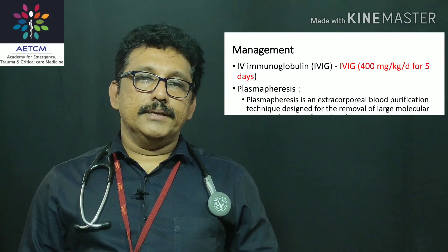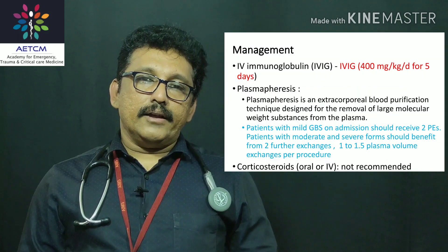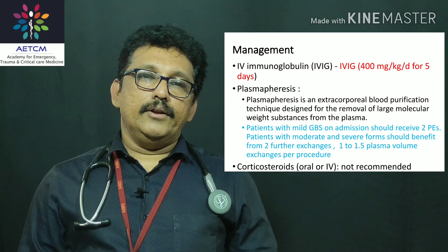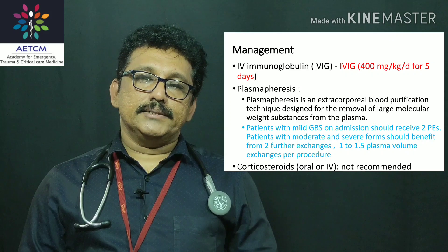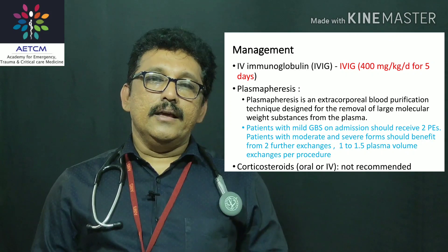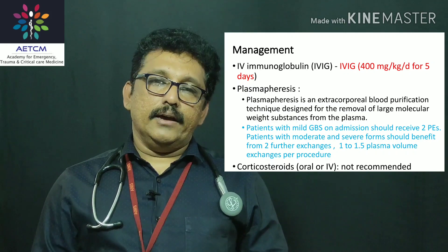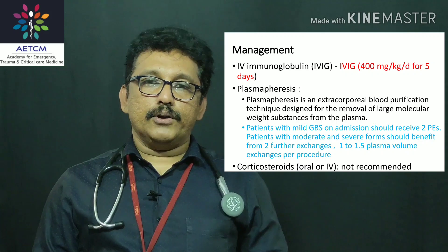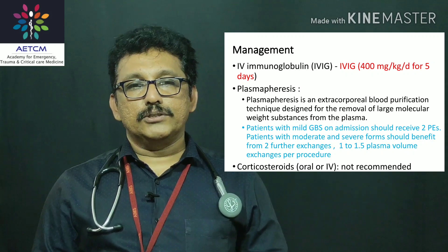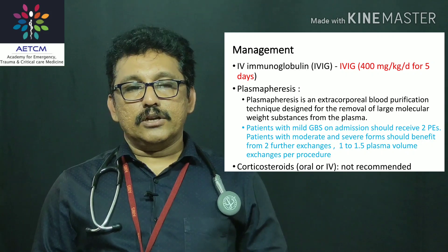In the emergency room, manage GBS by addressing airway, breathing, and circulation first. Airway problems arise mainly from respiratory muscle paralysis — the patient may require intubation. For circulation, the patient can have autonomic dysfunction causing hypertension, hypotension, tachycardia, or bradycardia, all of which are possible in GBS.